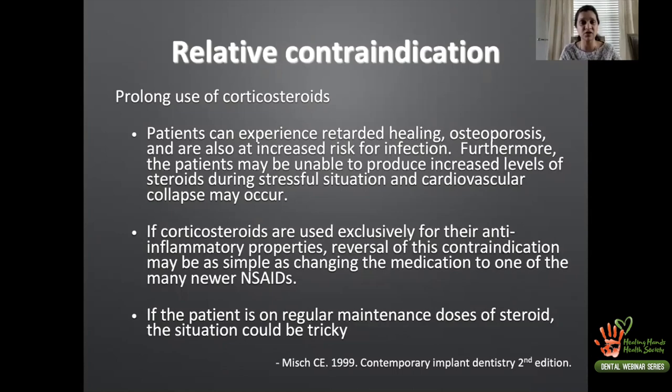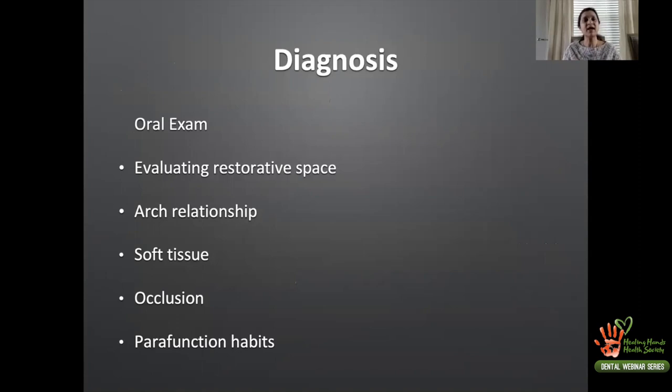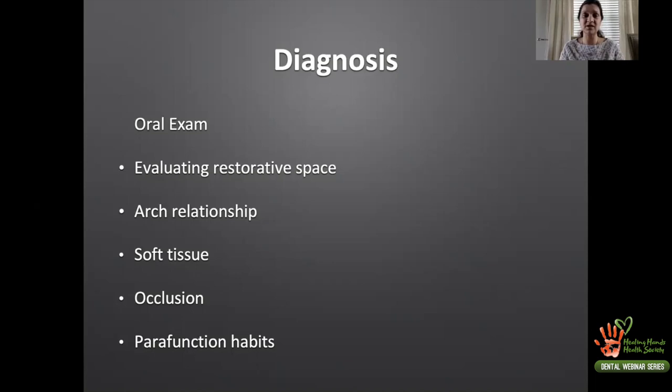Once we have sorted through medical history, medications, systemic risk factors, and ASA classification, we proceed to a complete oral examination. When doing the oral examination, we evaluate space availability, arch relationship, the type of soft tissue the patient presents with, occlusion, and any parafunctional habits.